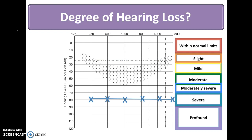Let's review another example. In this example, we see left ear air conduction thresholds, which are represented by the X, fall within the severe hearing loss range. Let's look at one more example. Here we have right ear air conduction thresholds on the audiogram. These air conduction thresholds for the right ear fall within the moderately severe hearing loss range.